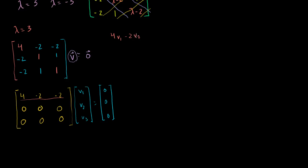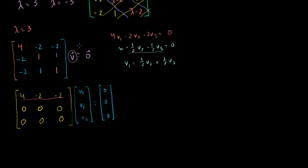The only meaningful equation is: 4 times v1 minus 2 times v2 minus 2 times v3 equals 0. Dividing by 4: v1 minus one-half v2 minus one-half v3 equals 0. So v1 is equal to one-half v2 plus one-half v3. If we let v2 equal a and v3 equal b, then v1 equals one-half a plus one-half b.